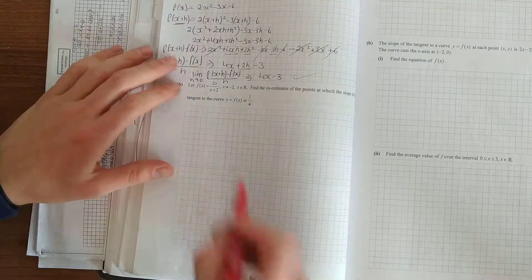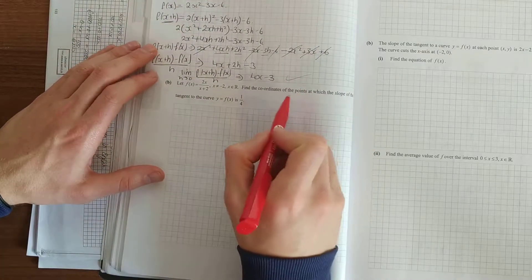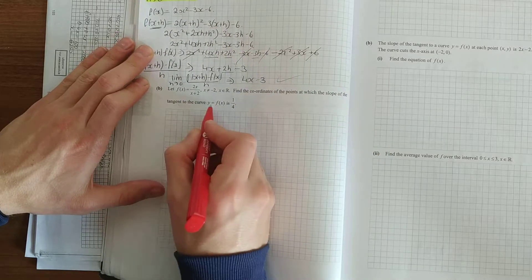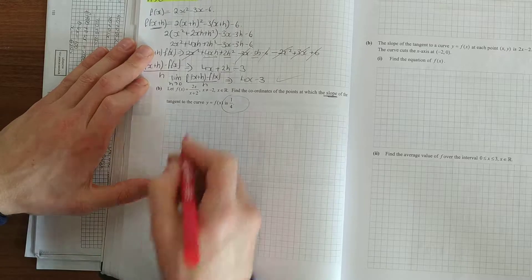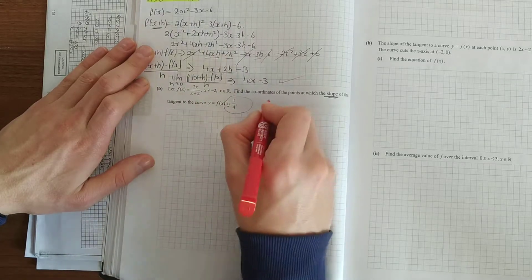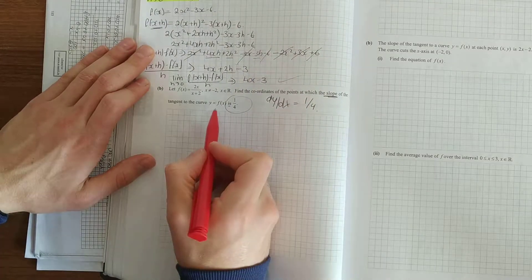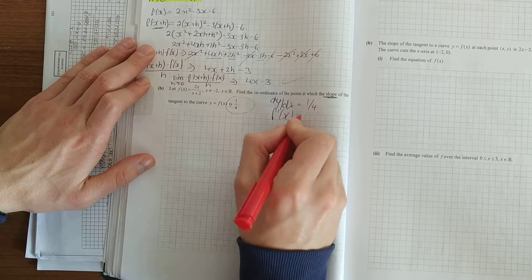The second one. Let f(x) equals 2x over x+2. Find the coordinates of the point at which the slope of the tangent to the curve is a quarter. Once you see the slope of the tangent. And as. What they're asking you is. dy/dx is equal to a quarter. Technically suppose it's f'(x) is equal to 1 over 4.